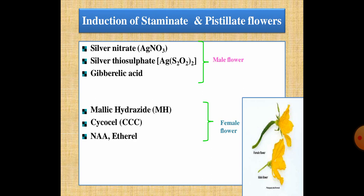Another effect is the induction of staminulate and pistillate flowers. Staminulate flower means male flower and pistillate flower means female flower. To increase male flowers, you must apply silver nitrate, silver thiosulfate (STS), and gibberellic acid. To increase female flowers, apply malic hydrazide, CCC (cycocel), NAA, and ethrel or ethylene.